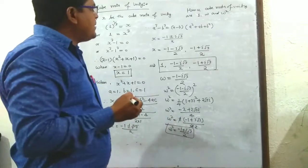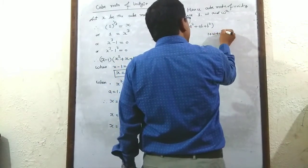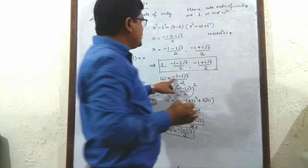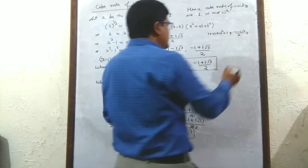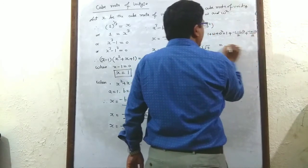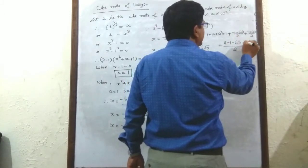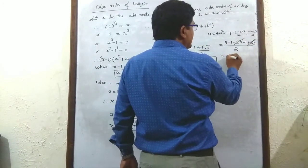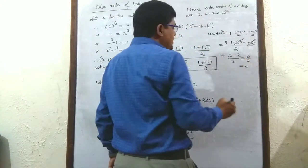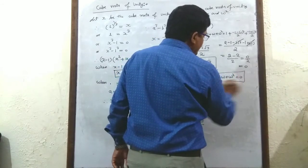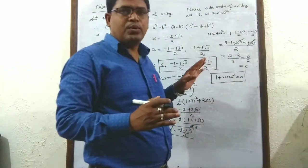Now, adding: 1 + ω + ω² = 1 + (-1 - i√3)/2 + (-1 + i√3)/2. Taking LCM of 2: (2 - 1 - i√3 - 1 + i√3)/2 = 0/2 = 0. So we get 1 + ω + ω² = 0, which is the first property of cube roots of unity.